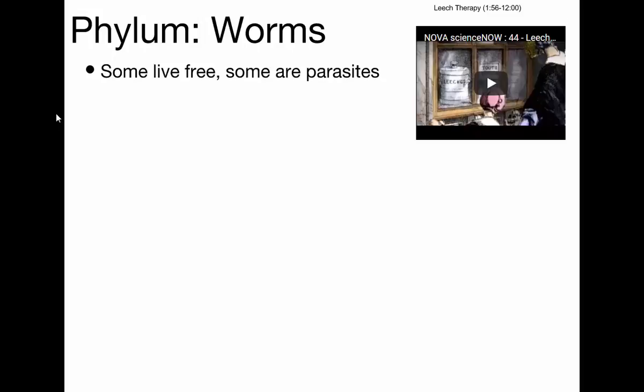We talked about three groups so far: we talked about the sponges, we talked about the cnidarians — jellyfish and sea anemones — and we talked about echinoderms, the spiny-skin animals: sea urchins, starfish, sand dollars. So we've got a few more groups to talk about today.